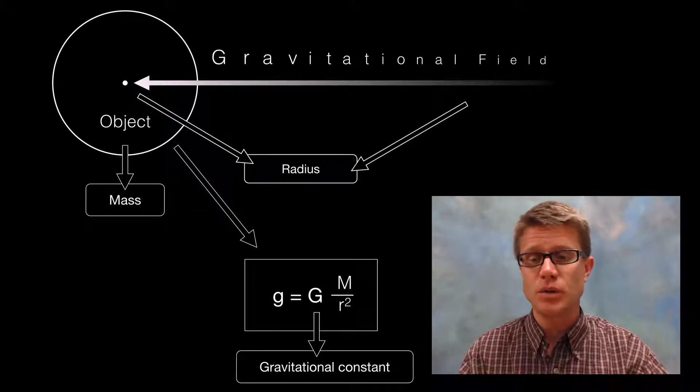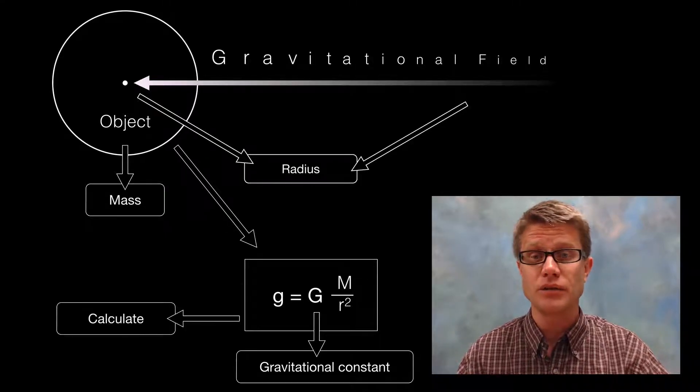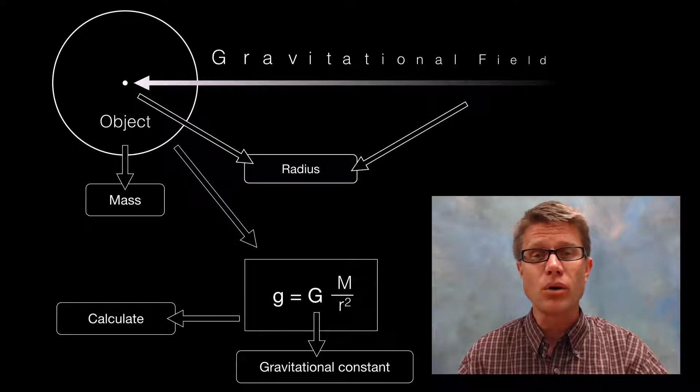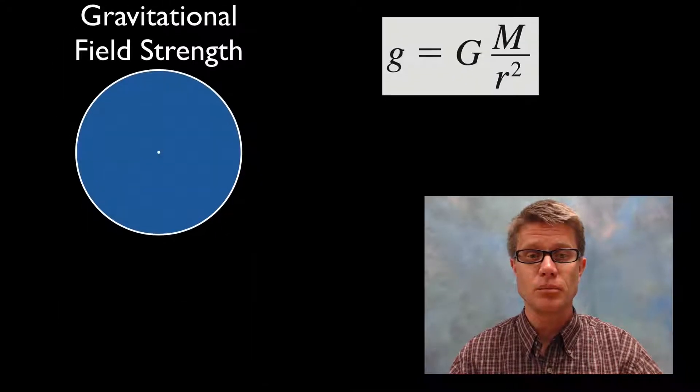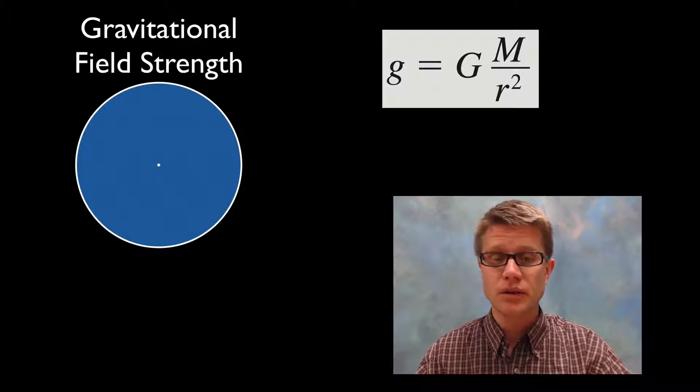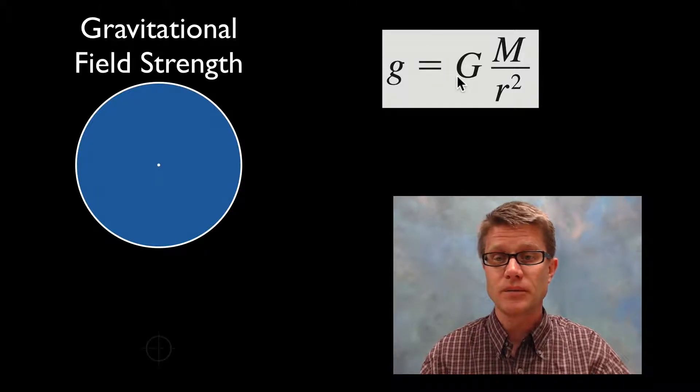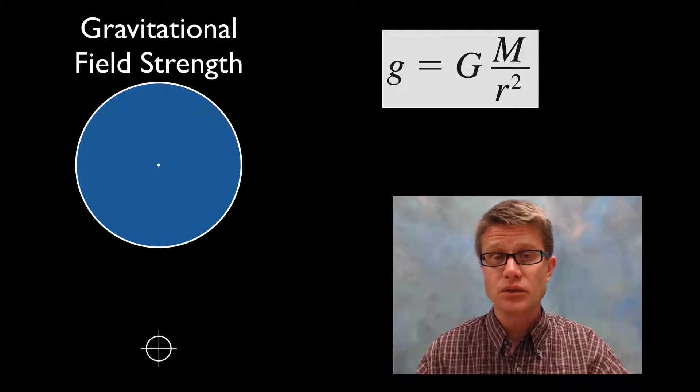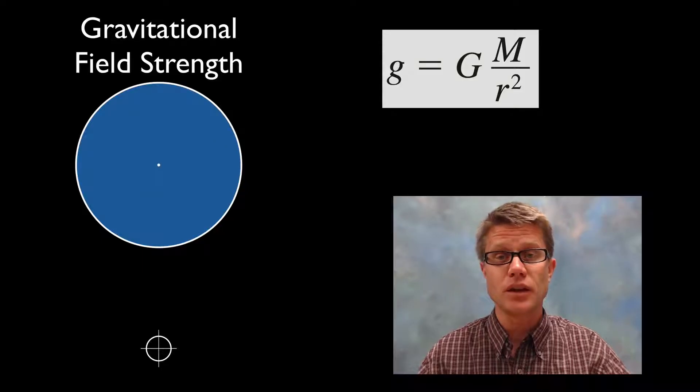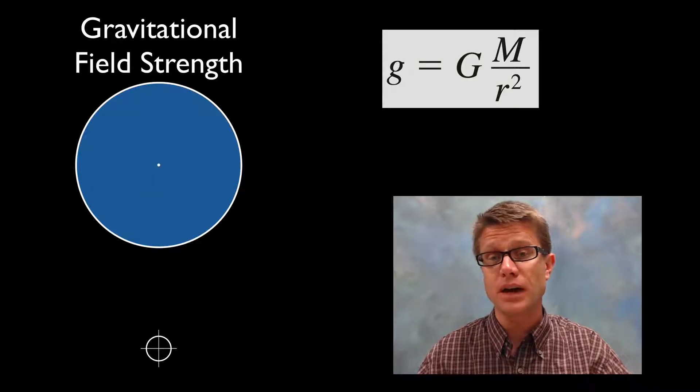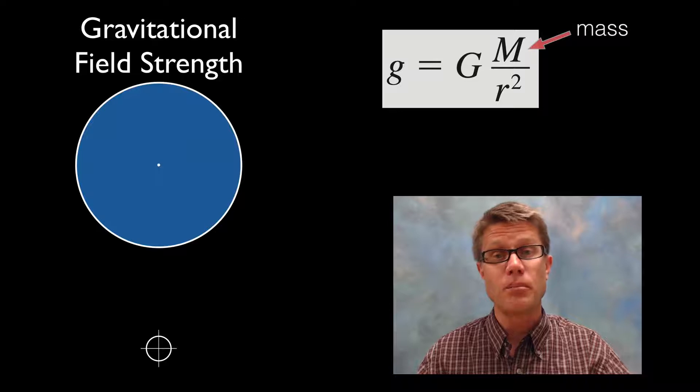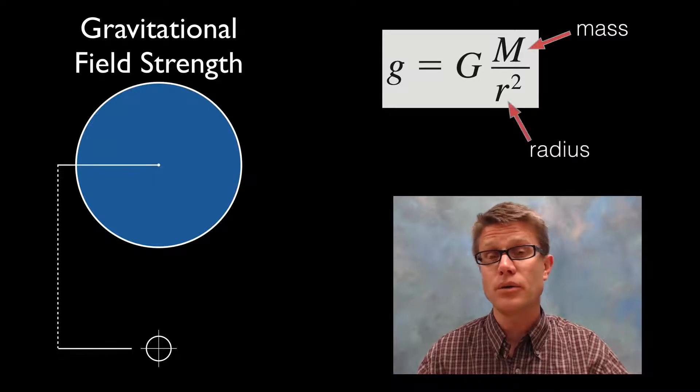In this class you should be able to calculate the gravitational field strength of an object or sitting on the surface of a really large object like a planet. Gravitational field strength, this is our equation right here. There are three parts to it. If we're measuring the gravitational field strength at a point separated from that object, we need to know the mass of the object. We need to know the radius.